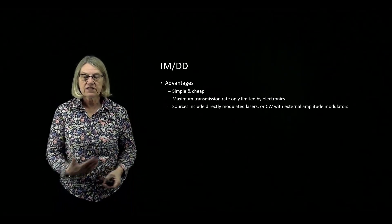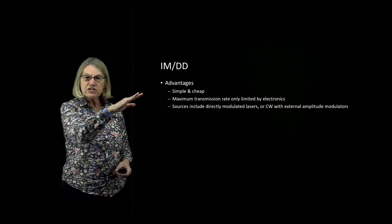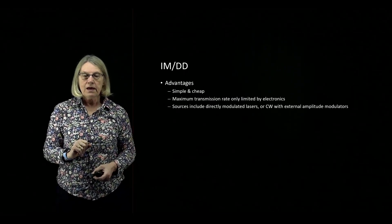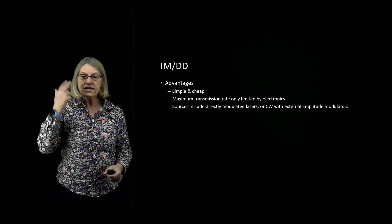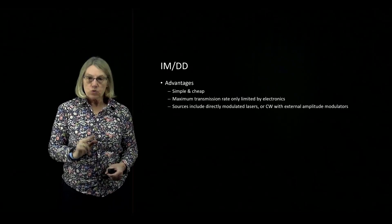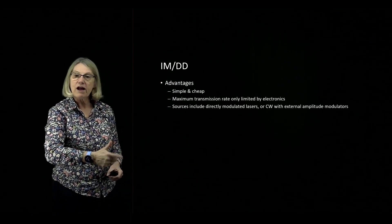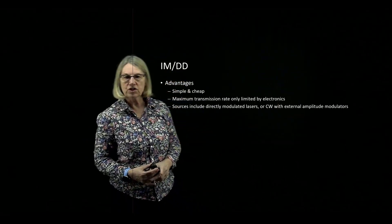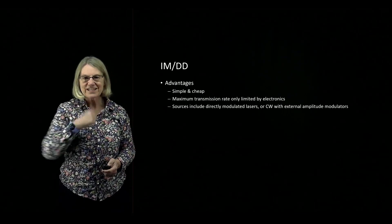The advantages of this type of modulation, which historically was the first modulation used in fiber-optic communications, is above all else that it is simple and it is cheap — very inexpensive to implement IMDD. In addition, your transmission rate is essentially only limited by your electronics. As long as I can switch my laser on and off as fast as I can, I can send data that fast. We could use directly modulated lasers, or a continuous wave laser with an external amplitude modulator.